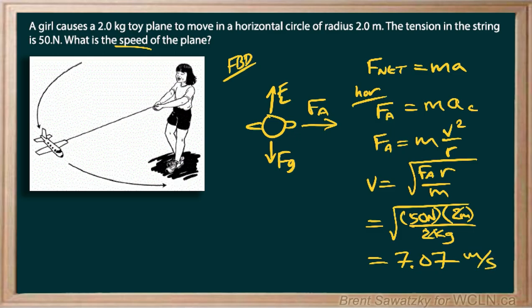And so for a better final answer, considering sig figs, let's call this 7.1 meters per second. Now it says speed, so we don't necessarily have to show any direction when we're asked for speed. If we were asked for velocity, then we would have to, of course, include a direction.